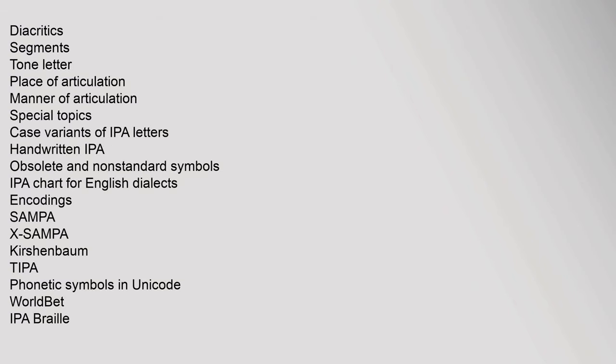The IPA chart covers diacritics, segments, tone letters, place of articulation, manner of articulation, special topics, case variants of IPA letters, handwritten IPA, obsolete and non-standard symbols, IPA chart for English dialects, encoding systems such as SAMPA, X-SAMPA, Kirshenbaum, typophonetic symbols in Unicode, World Bet, IPA Braille, and various place of articulation categories.